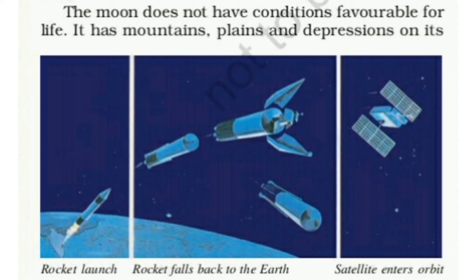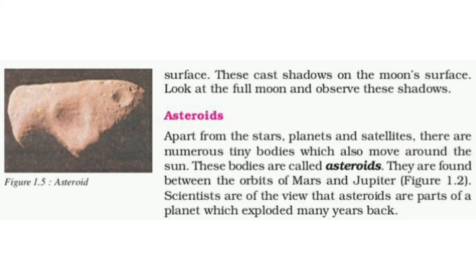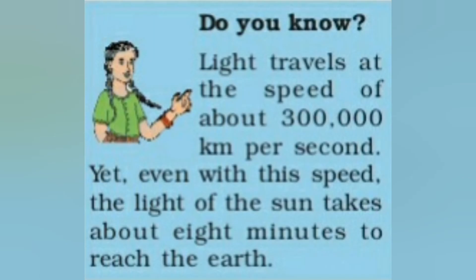Yahan par mountains, plains aur gaddhe hain, jo Moon ke surface par shadows banate hain. Poornima means full moon ke din inki shadows ko dekha ja sakta hai. Do you know, light travels at the speed of about 3 lakh km per second. Yet even with this speed, the light of the sun takes about 8 minutes to reach the Earth.